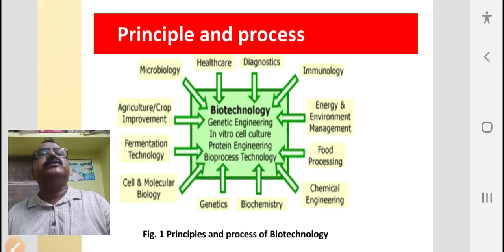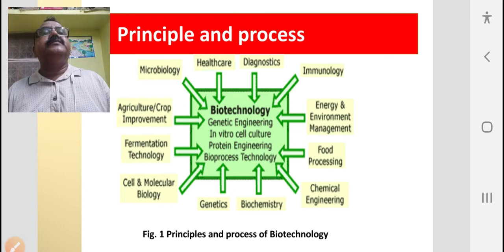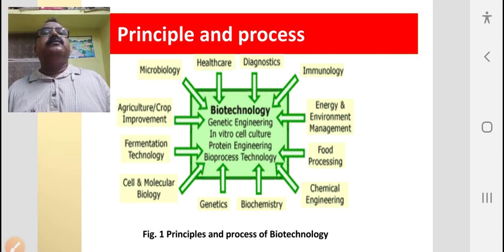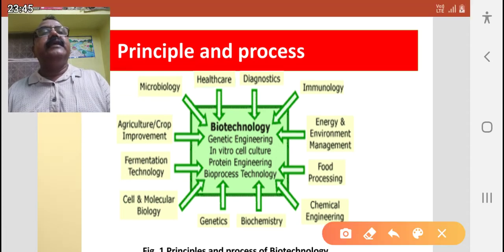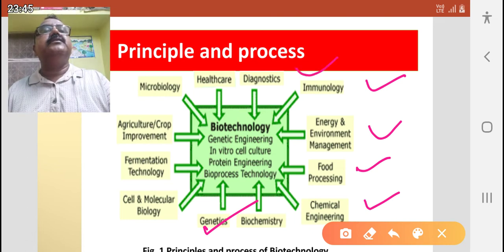Let us go to the principle and process of biotechnology. Biotechnology uses different principles and processes. The principles are taken from microbiology, agriculture, fermentation process, cell and molecular biology, genetics, biochemistry, food processing, chemical engineering, immunology, energy management, diagnostics, health care, microbiology, etc.